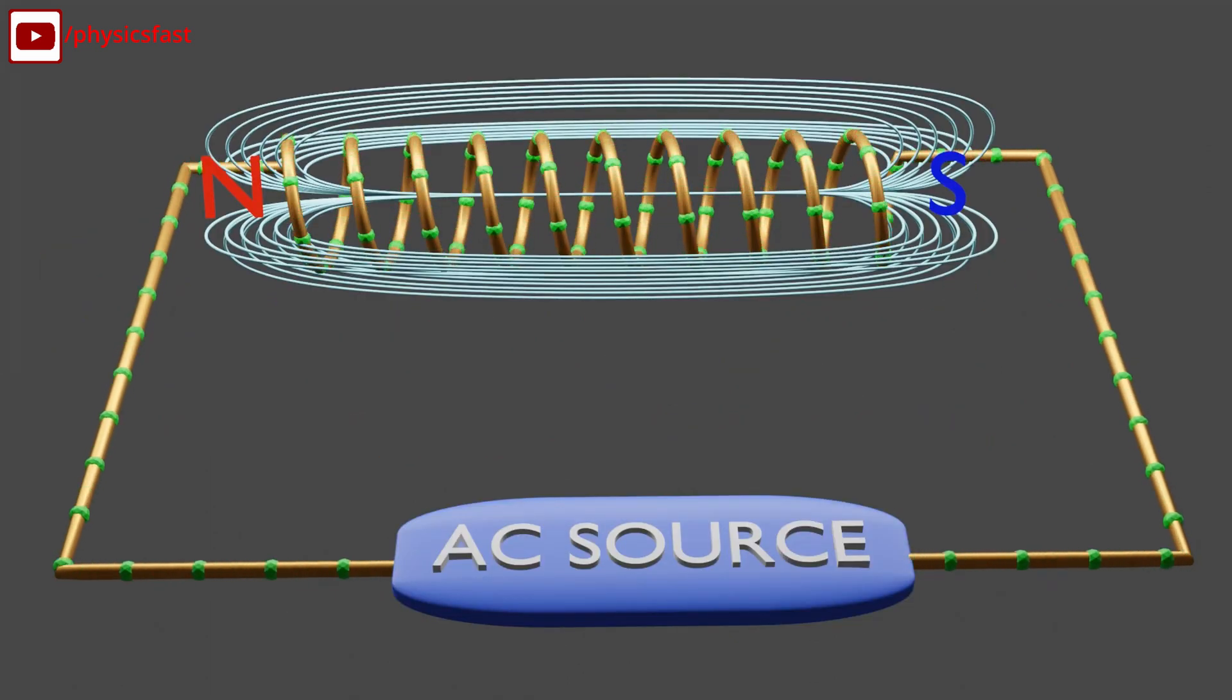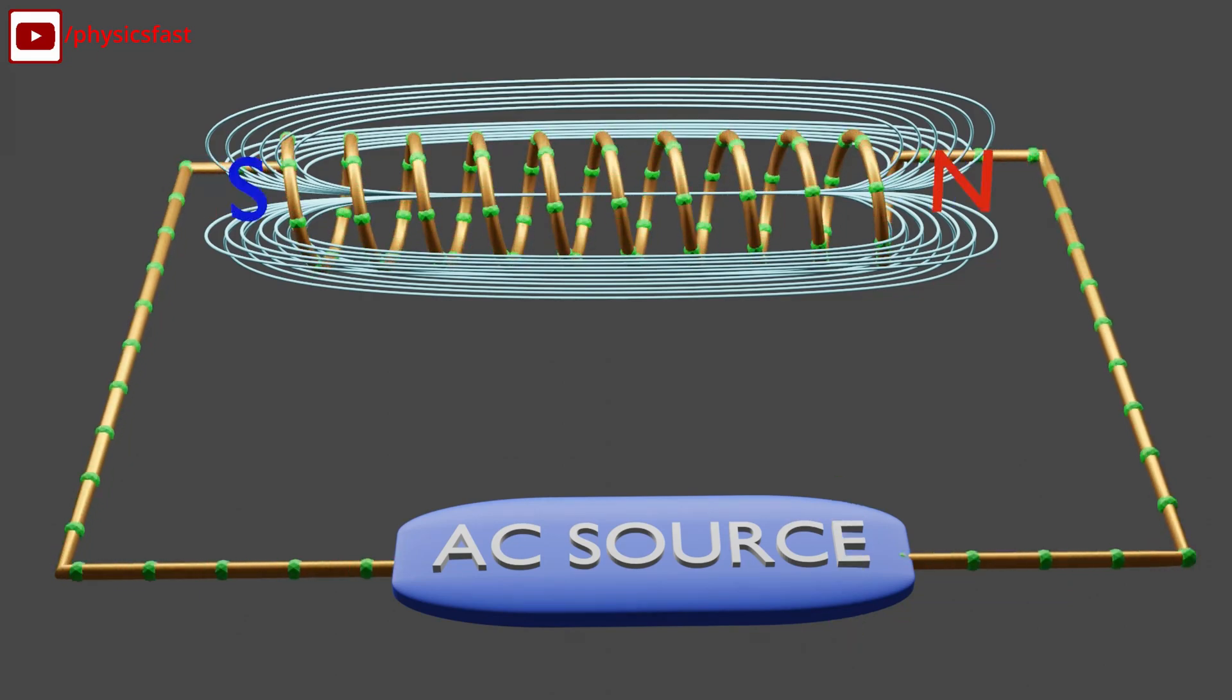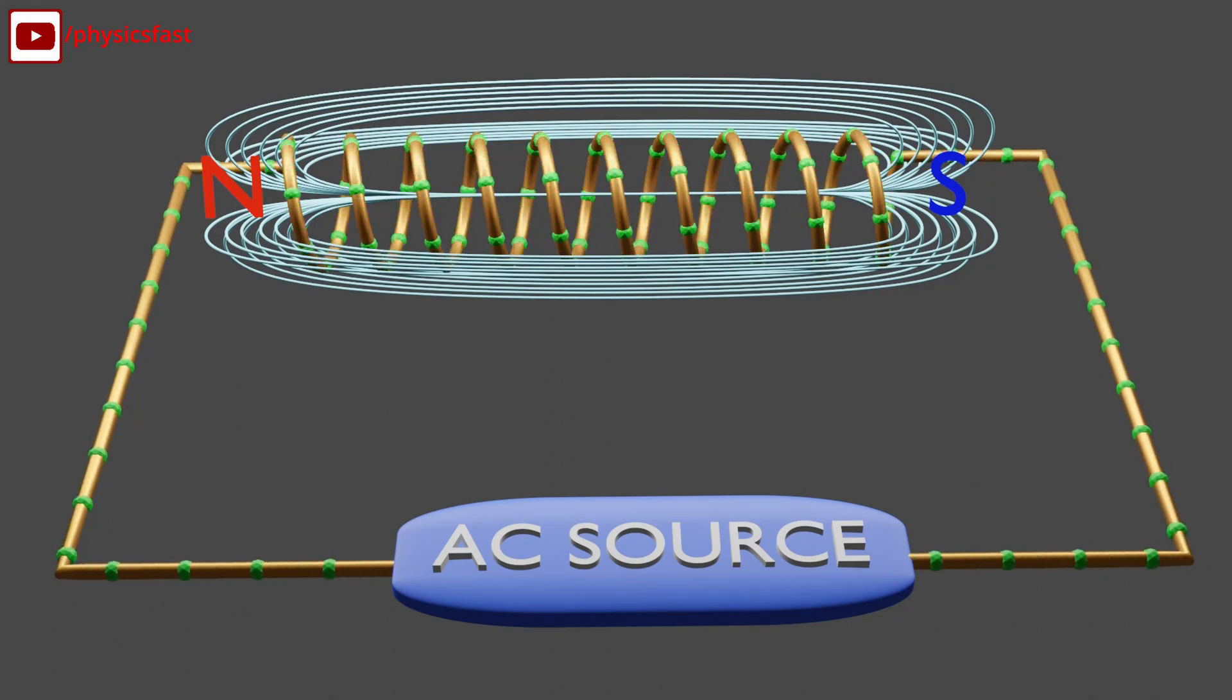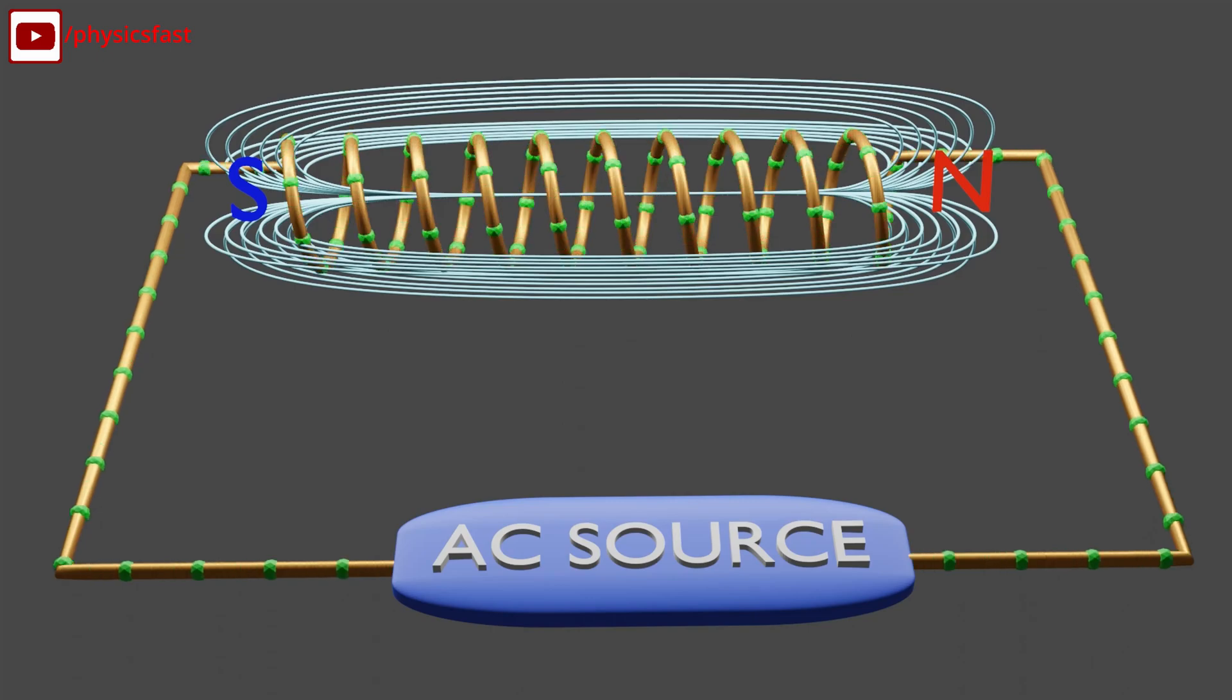If we connect a sinusoidal AC source with the inductor, the direction of the magnetic field lines also changes. As the direction of the current changes, the direction of the magnetic field lines will also change.